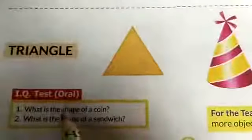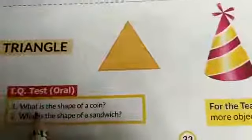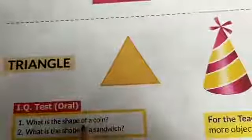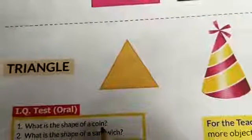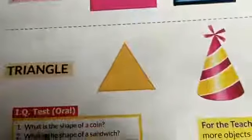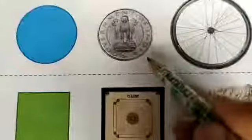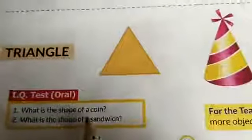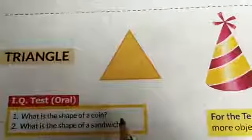Now we will do question answer. First question: What is the shape of a coin? Answer: circle.